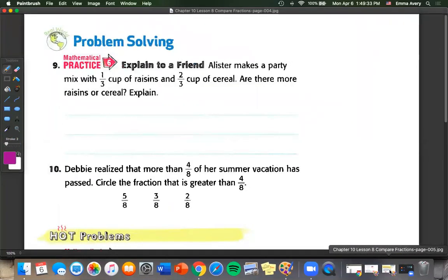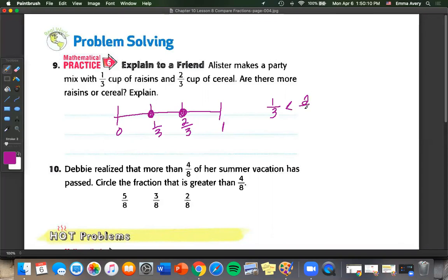On to the next page. Explain to a friend: Alistair makes a party mix with one third cup raisins and two thirds cup cereal. Are there more raisins or cereal? We can draw this on our number line. If we have zero at this end and one at this end, one third, two thirds, two thirds cup cereal is a lot bigger than one third cup raisins. So we can say one third is less than two thirds.